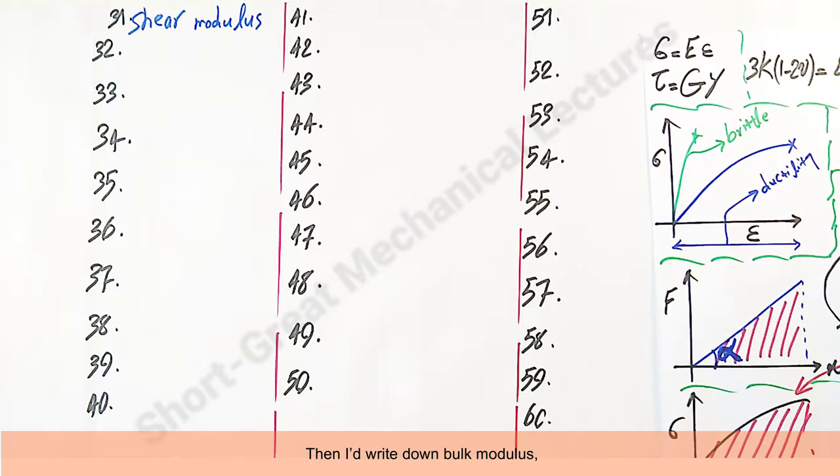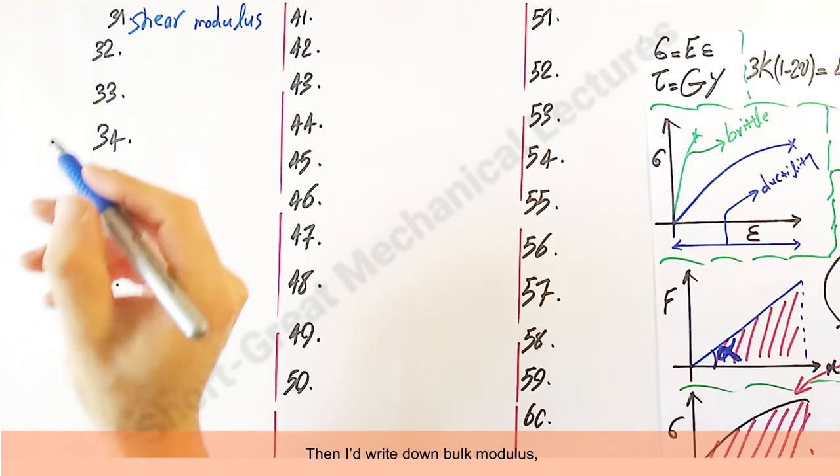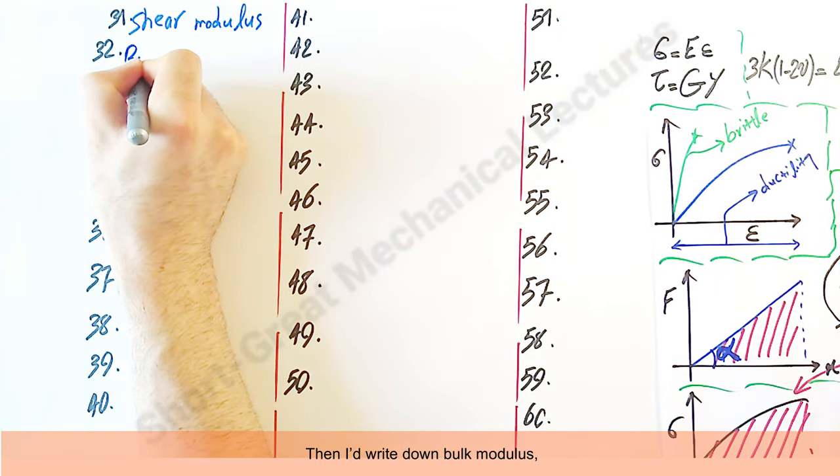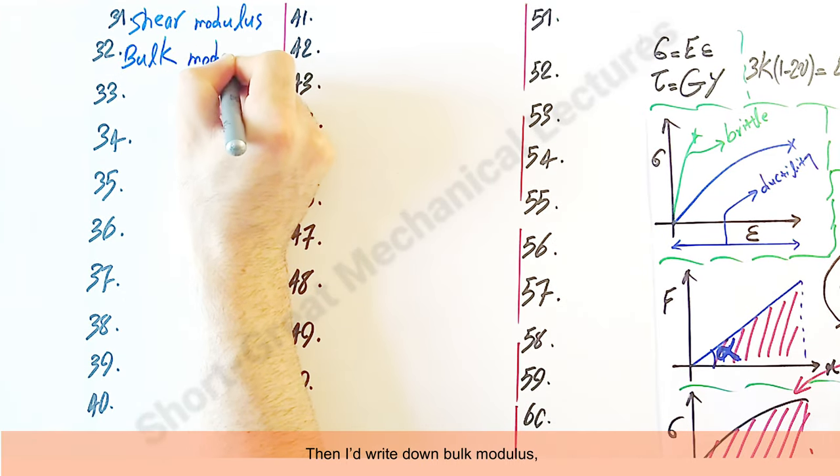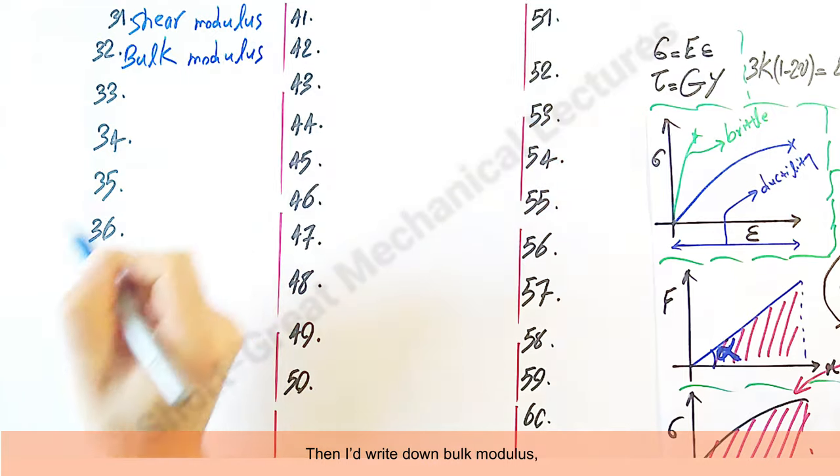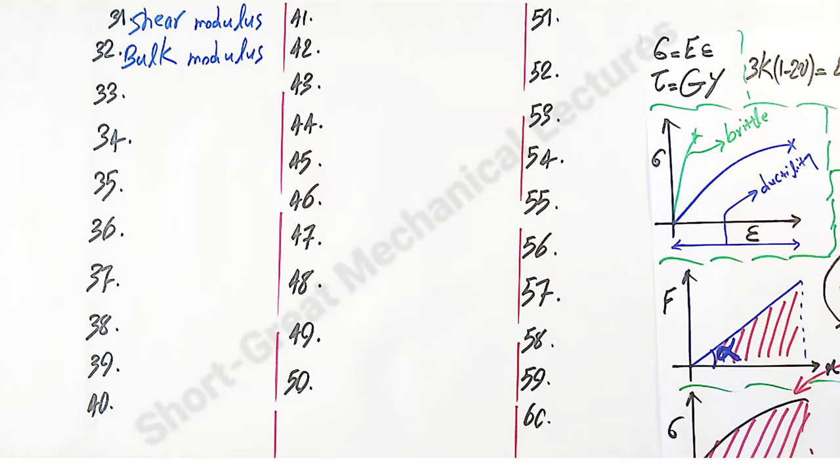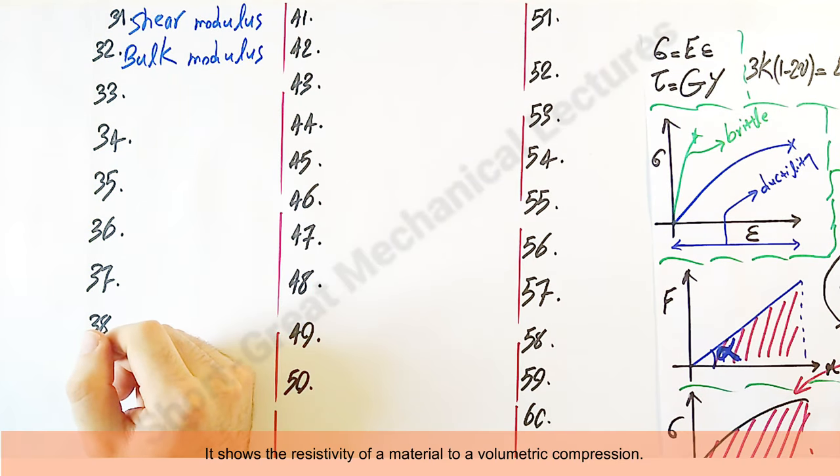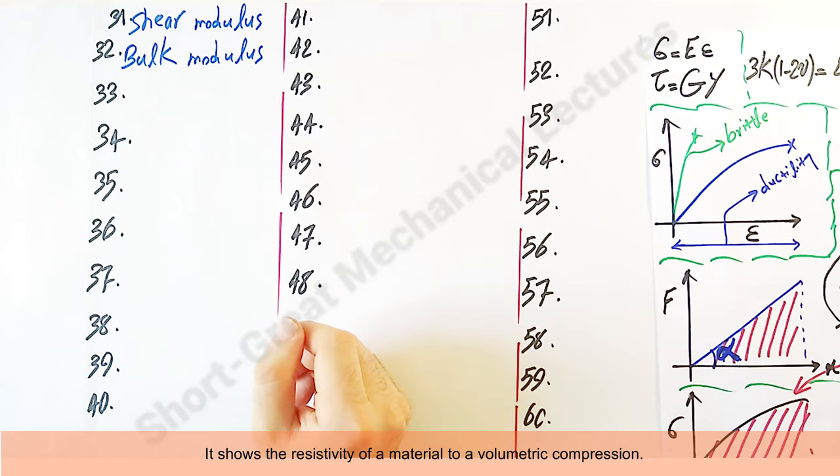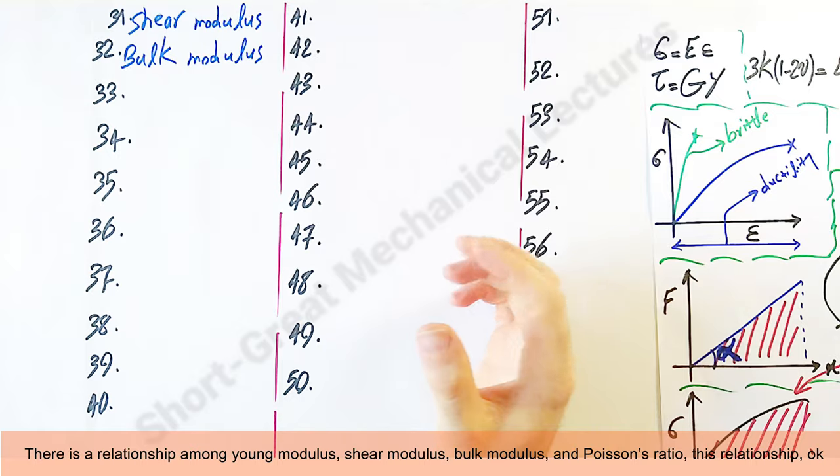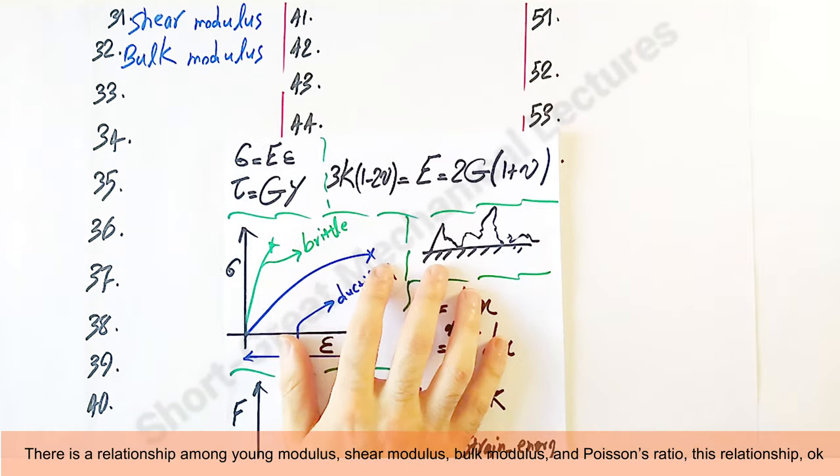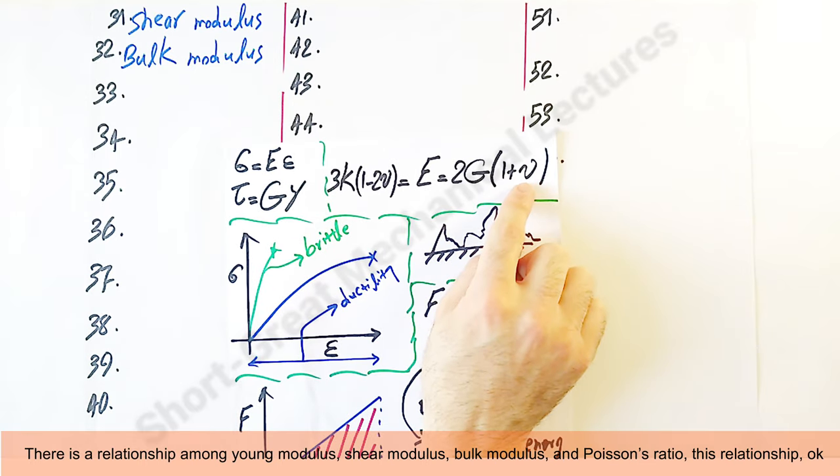Then I'd write down bulk modulus. It shows the resistivity of material to a volumetric compression. There is a relationship among Young's modulus, shear modulus, bulk modulus, and Poisson's ratio. This relationship, okay, as you can see.